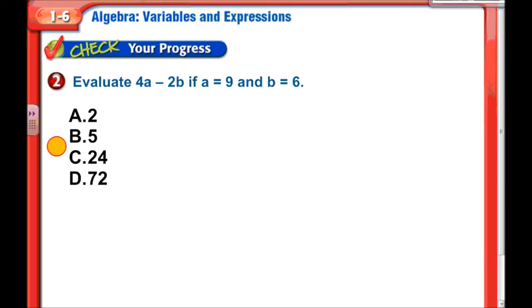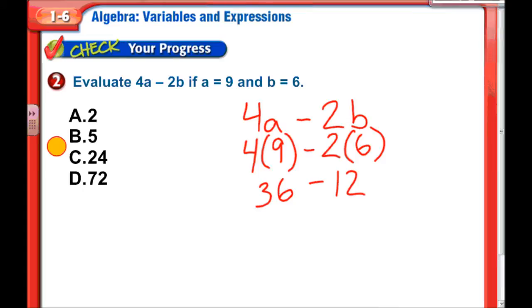One for us. We're going to evaluate 4a minus 2b if a equals 9 and b equals 6. Alright, so that's 4a minus 2b. We're going to replace the a with a 9. So that becomes 4 times 9, minus 2 times, now b is supposed to be 6. Next in the order of operations would, of course, be multiplying. 4 times 9 is 36. And 2 times 6 is 12. Finish up with a little bit of subtraction. 36 minus 12 is 24.